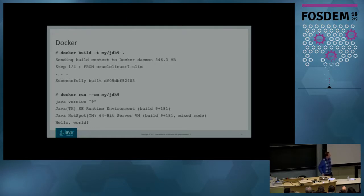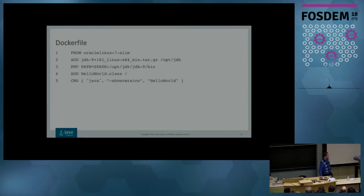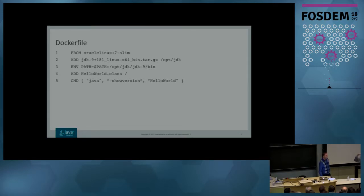Every line in a Dockerfile results in a new layer in the composed image. Those layers can be shared and cached independently. But there's also a cost to having lots of layers — the overlay filesystem will impose some performance and startup cost for each layer. Generally, a three-to-five line Dockerfile is pretty minimal. There are tools to squash your images into a single layer if you really need that performance.